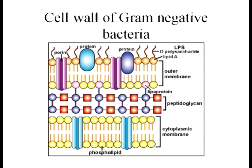The cell wall of the gram-negative bacteria is a little bit more complex. This time we see that there's an outer membrane. Then the layer of peptidoglycan is much thinner — this time it's represented by only two sets of the red square purple circle complexes. But it also has a cytoplasmic membrane in common with the gram-positive bacteria. As we'll see in a moment, these differences in the cell wall are the reason that gram-positive and gram-negative bacteria stain differentially.